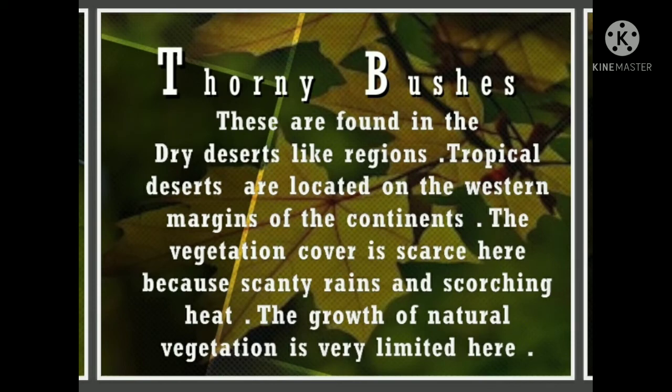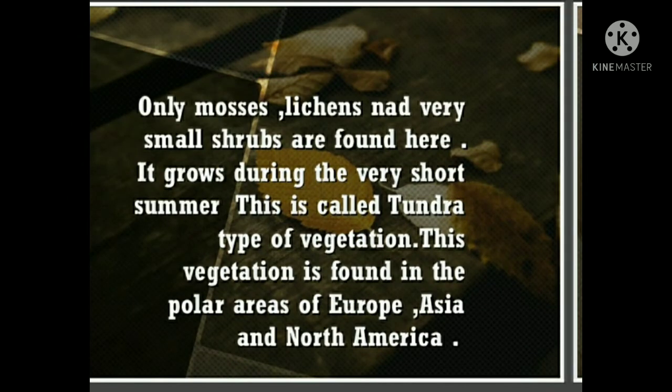Thorny bushes are found in dry desert-like regions. Tropical deserts are located on the western margins of continents. Vegetation cover is scarce due to scanty rains and scorching heat, so the growth of natural vegetation is very limited. Only mosses, lichens and smaller shrubs are found here, growing during a very short summer. This is called tundra vegetation, and it is found in the polar areas of Europe, Asia and North America.